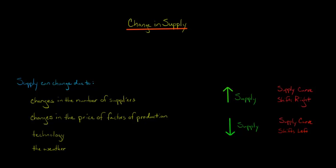In this video, I'd like to show you how to graph a change in supply. A change in supply can occur for a number of reasons. It could be that there's been a change to the number of suppliers, maybe new suppliers have entered the market. Could be a change in the price of factors of production, maybe labor became cheaper.